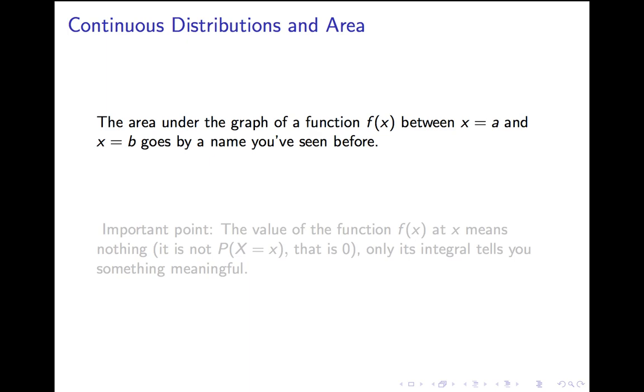That should have a tingle of familiarity. You've talked about the area under the graph of a function f of x between x equals a and x equals b before, and you probably even remember the name you gave it. It's the integral. Okay? So the integral of f of x from a to b gives you the probability that the random variable will fall between a and b. The probability that a randomly selected woman's height will be between a and b.